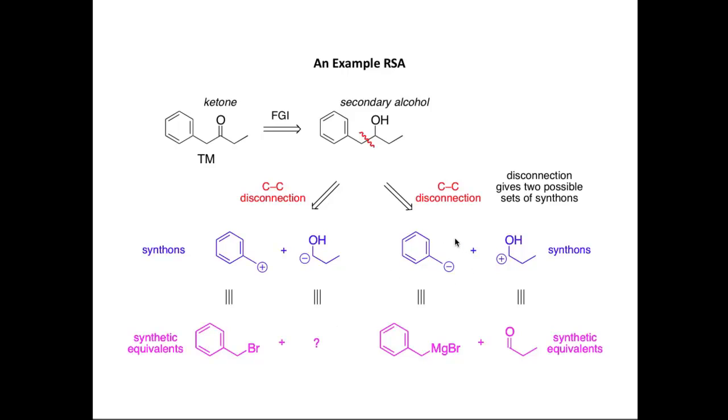A synthetic equivalent for this negative charge on the carbon next to a benzene ring can be a Grignard reagent, an organometallic reagent. This reagent behaves like a benzylic anion. And then the synthetic equivalent for this positively charged synthon is an aldehyde. So we've recognized two sensible synthetic equivalents.